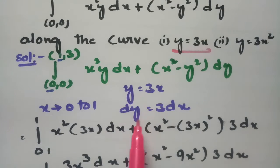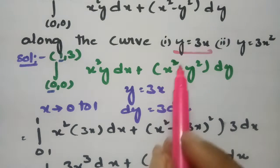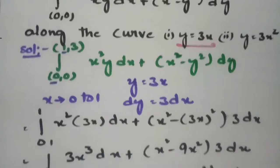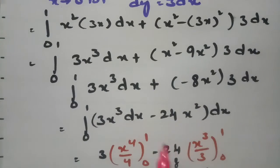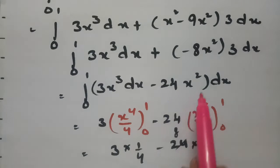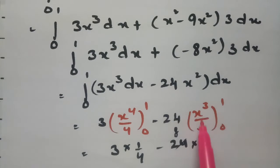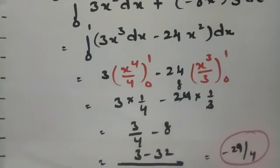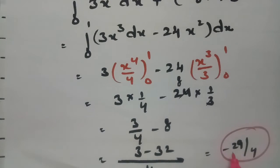To summarize for y equals 3x: we set dy equal to 3 dx and transformed every term in terms of x. After integrating, x³ becomes x⁴/4 and x² becomes x³/3, evaluated between 0 and 1, giving the value minus 29/4.